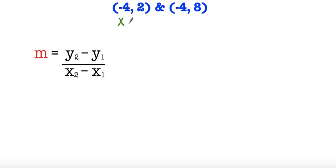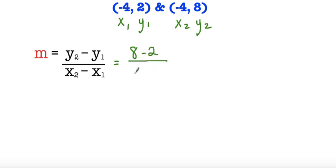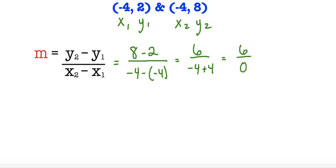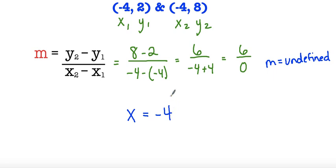Final example here — we're going to do the same thing. First we label our coordinates: x sub 1, y sub 1, x sub 2, and y sub 2. We take y sub 2 minus y sub 1 and subtract: 8 minus 2 divided by negative 4 minus negative 4. So 8 minus 2 is 6. Negative 4 minus negative 4 is the same thing as negative 4 plus 4, giving us 6 divided by 0, which is undefined. So our slope here is undefined. When we have an undefined slope, we know that it's just x equals negative 4. Because x will always be negative 4, we'll have a vertical line — it does not move to the right or to the left at all. And that's it.